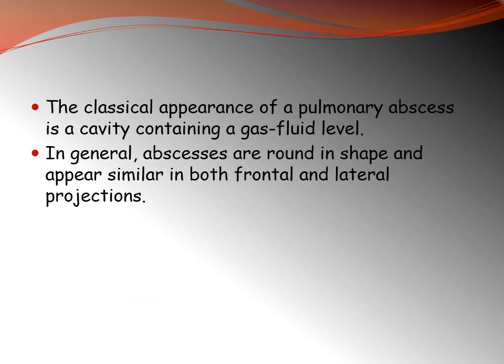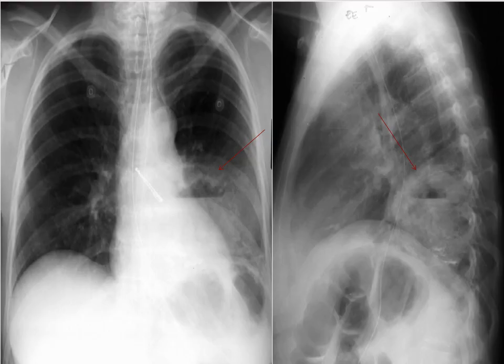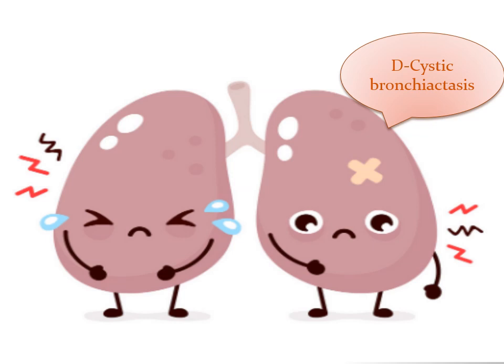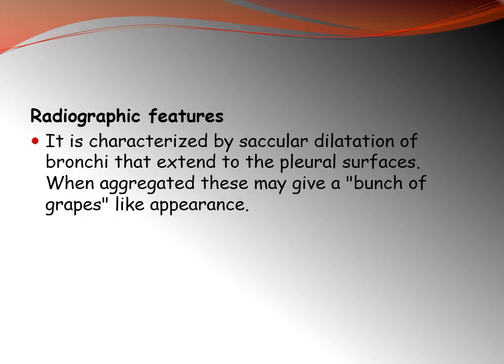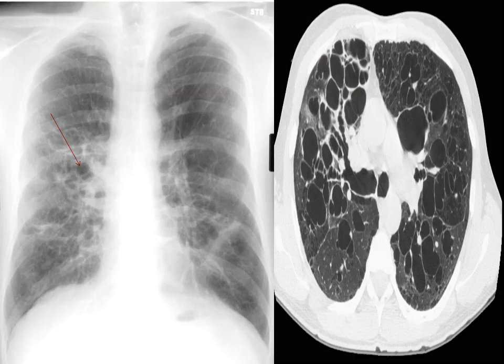Pulmonary abscess: the classical appearance is a cavity containing a gas-fluid level. Generally, abscesses are rounded in shape with similar appearances on both frontal and lateral projections. Cystic bronchiectasis is characterized by saccular dilatation of bronchi extending to the pleural surface. When aggregated, they may give a bunch-of-grapes appearance.